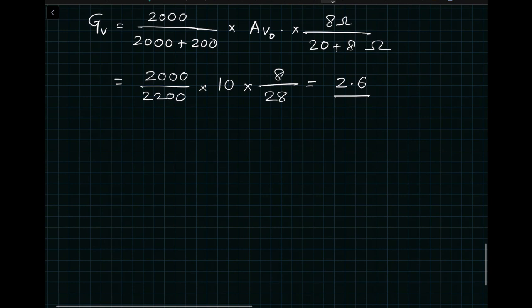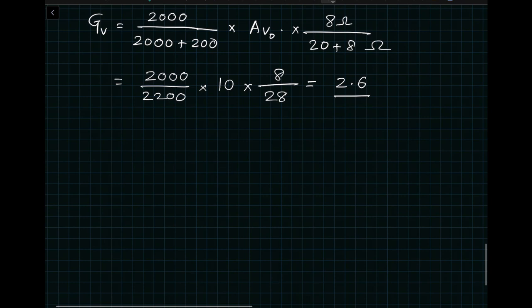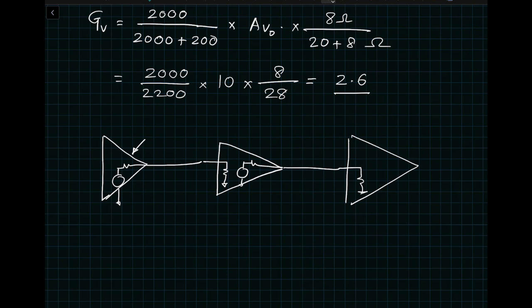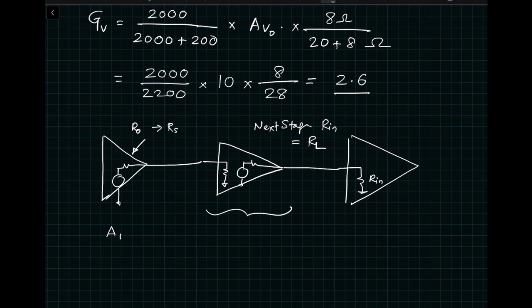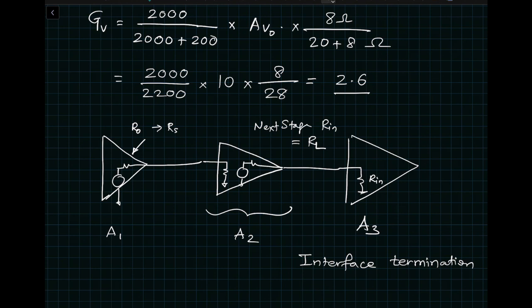In a generic multi-stage case, the output resistance of the previous stage becomes the source resistance for the amplifier under consideration, and the input resistance of the next stage becomes the load resistance RL. So if you have amplifiers A1, A2, and A3, the overall gain is not simply A1 × A2 × A3 — you must account for the interface termination effects between stages before commenting on the overall gain.